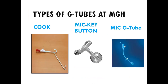What are the common types of G-tubes? Here are three pictures of common tubes used at Mass General Hospital. Brands and types vary by institution. One of the most common at Mass General is called the Cook Tube — the one on the left with a red cap.